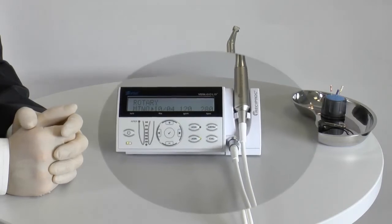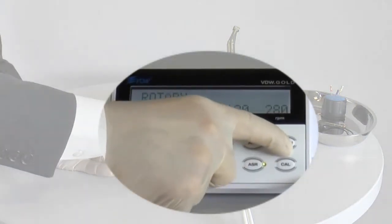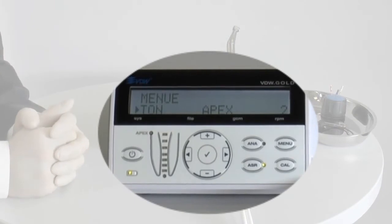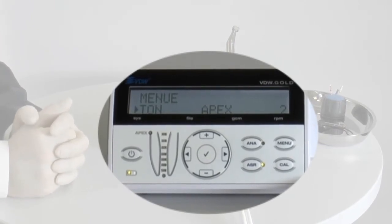By pressing the menu key, you can change settings. Volume for the motor and apex locator warning signals can be set individually.